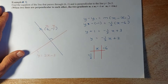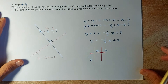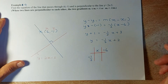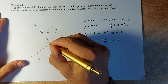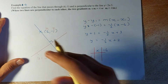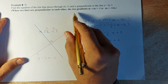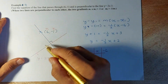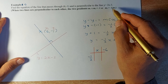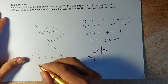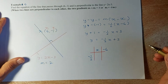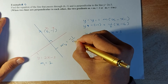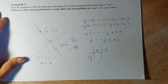The last and hardest example — example 4 — is when two lines are perpendicular to each other. Find the equation of the blue line that passes through (6, -1) and is perpendicular to y = 2x minus 3. Perpendicular means the two lines meet at 90 degrees. The property of perpendicular gradients is that m1 times m2 equals -1, or m2 = -1 divided by m1. The gradient of the red line is 2, so the gradient of the blue line is -1/2.